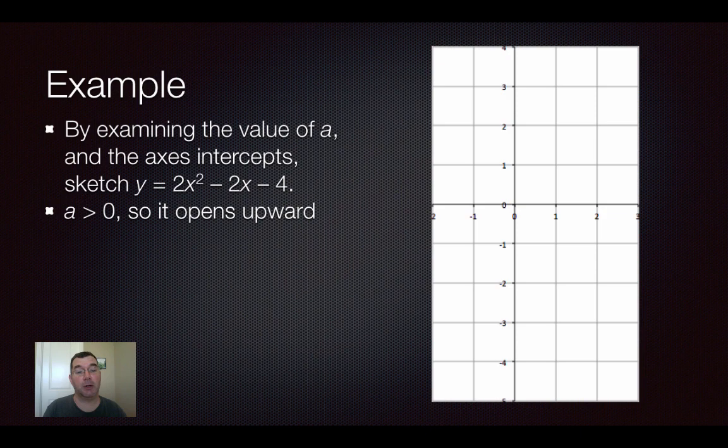Now a is the number that's being multiplied by the x squared, so in this case that's the 2. That's bigger than 0 and any time a is bigger than 0, we know that the parabola opens upward.